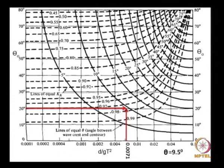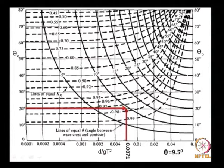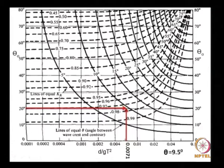This picture gives you the lines of equal refraction coefficient — 0.92, 0.90, 0.85, and so on. The deep water direction is shown, and for very small D/GT² there is not much variation, but as D/GT² increases, the variation is quite phenomenal.